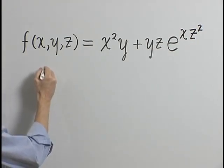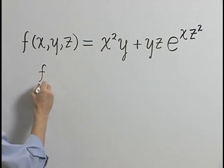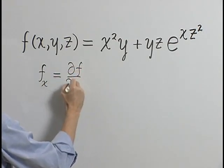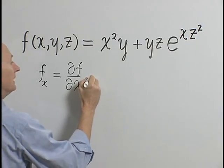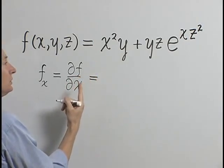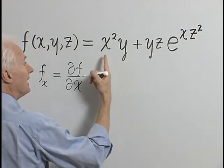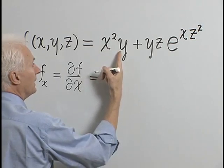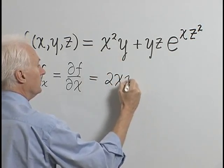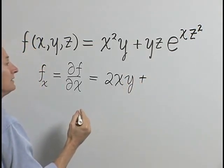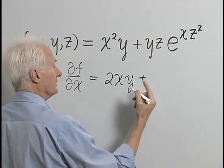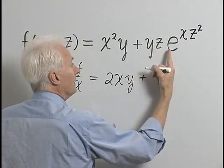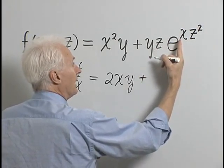Let's start with the partial derivative of f with respect to x, denoted f sub x or ∂f/∂x. We're going to think of y and z as constant. The derivative of x² is 2x times the constant y, so we just have 2xy. Then we have the coefficient yz of e to the power xz².